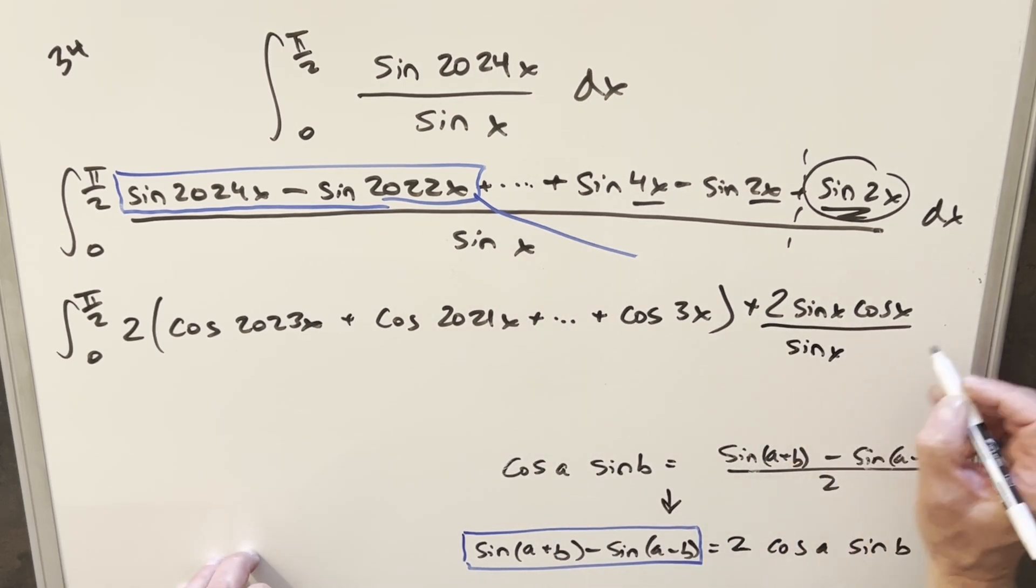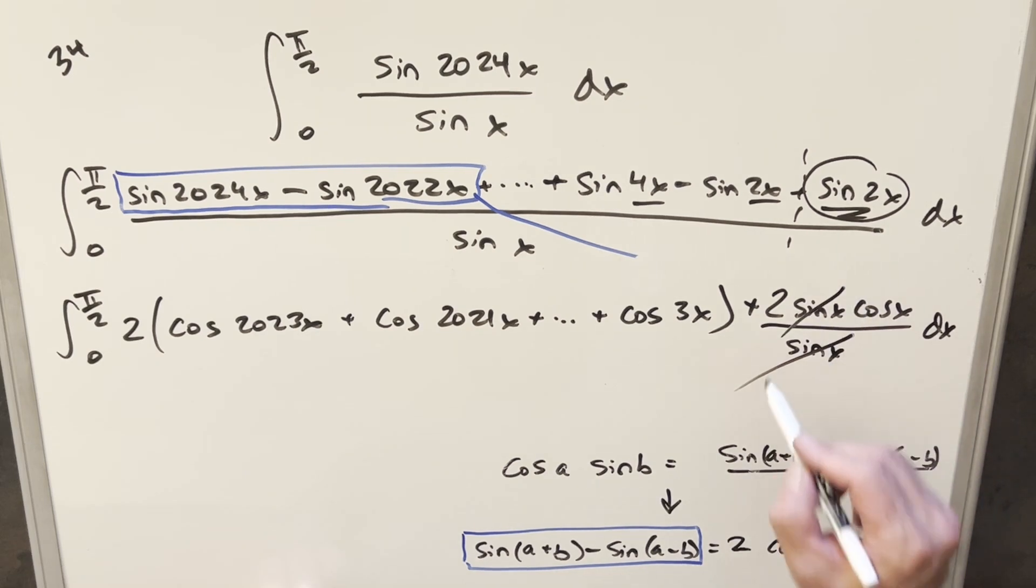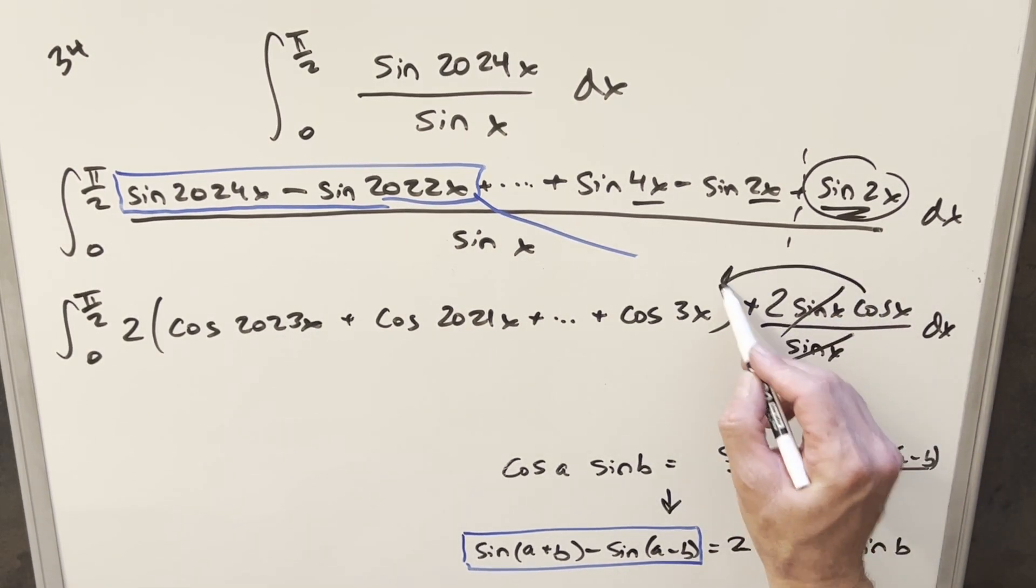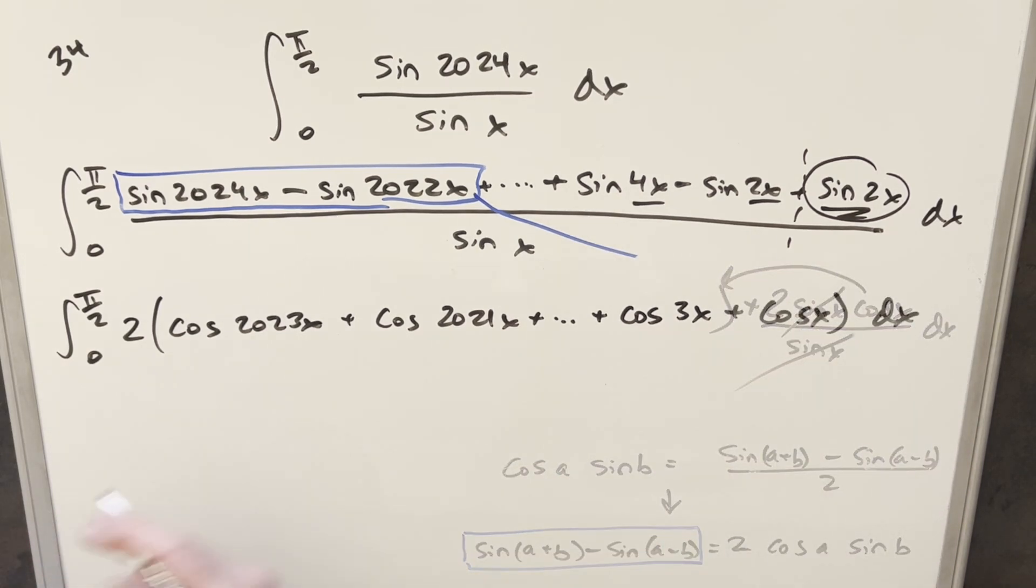And that's pretty nice because then sine cancels with this. And really, we could actually just now, like, fold this back into here because we go cosine 3x, cosine x. We still have the 2. But now here, we're ready to integrate.